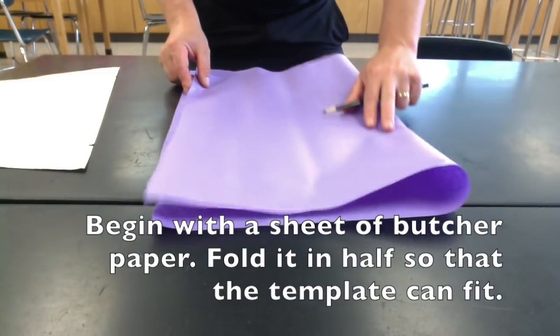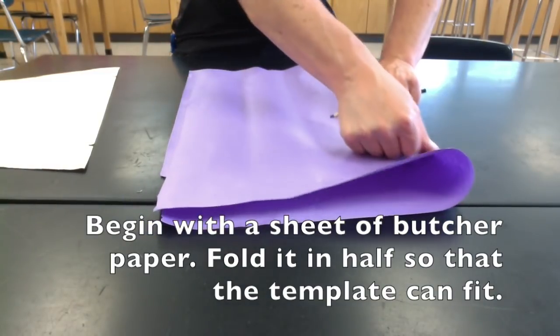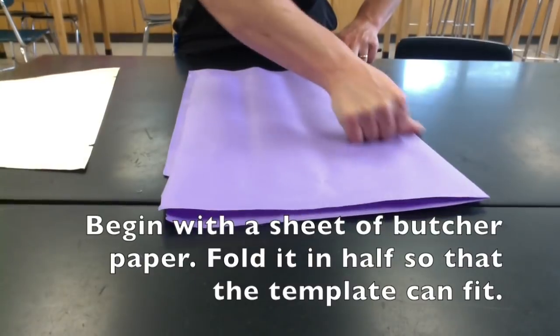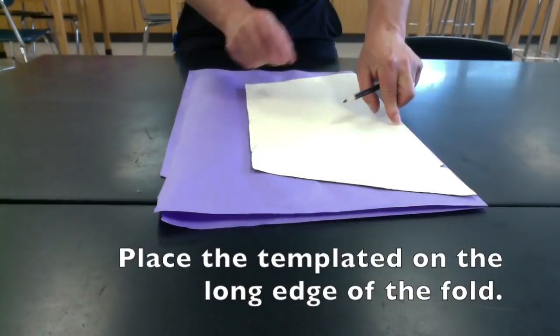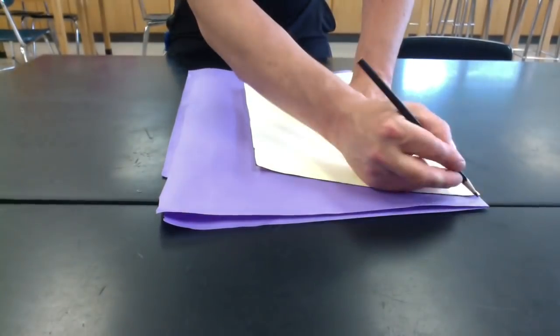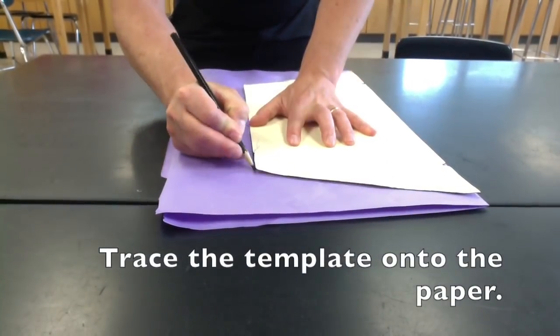First, begin with a sheet of butcher paper. Fold it in half so the template can fit. Place the template on the long edge of the fold. Then trace the template on the paper.